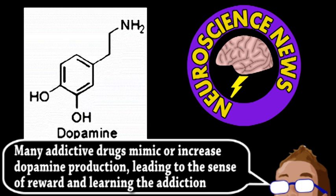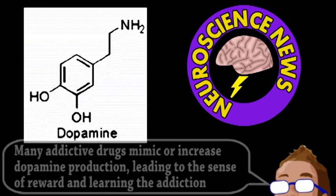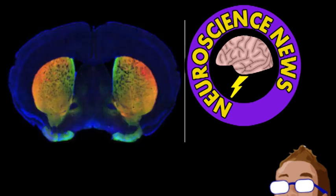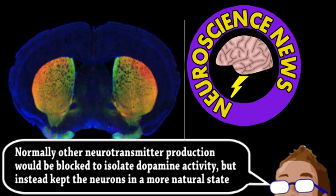Many treatments attempt to correct this by supplying precursors for dopamine, allowing for more rapid production. However, these treatments often have only a temporary effect, and this team likely discovered why. They were studying mice dopamine neurons in a dish to see how they affected surrounding neurons. Using optogenetics, the dopamine neurons were activated with light.